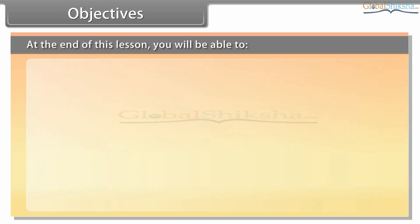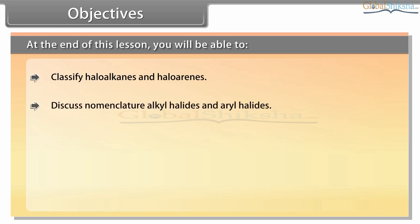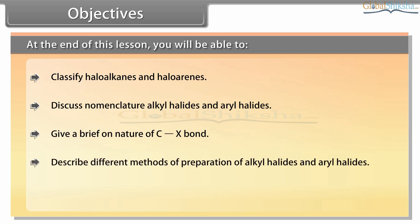At the end of this lesson, you will be able to: classify haloalkanes and haloarenes, discuss nomenclature of alkyl halides and aryl halides, give a brief on nature of C-X bond, describe different methods of preparation of alkyl halides and aryl halides, and describe physical properties of alkyl halides.